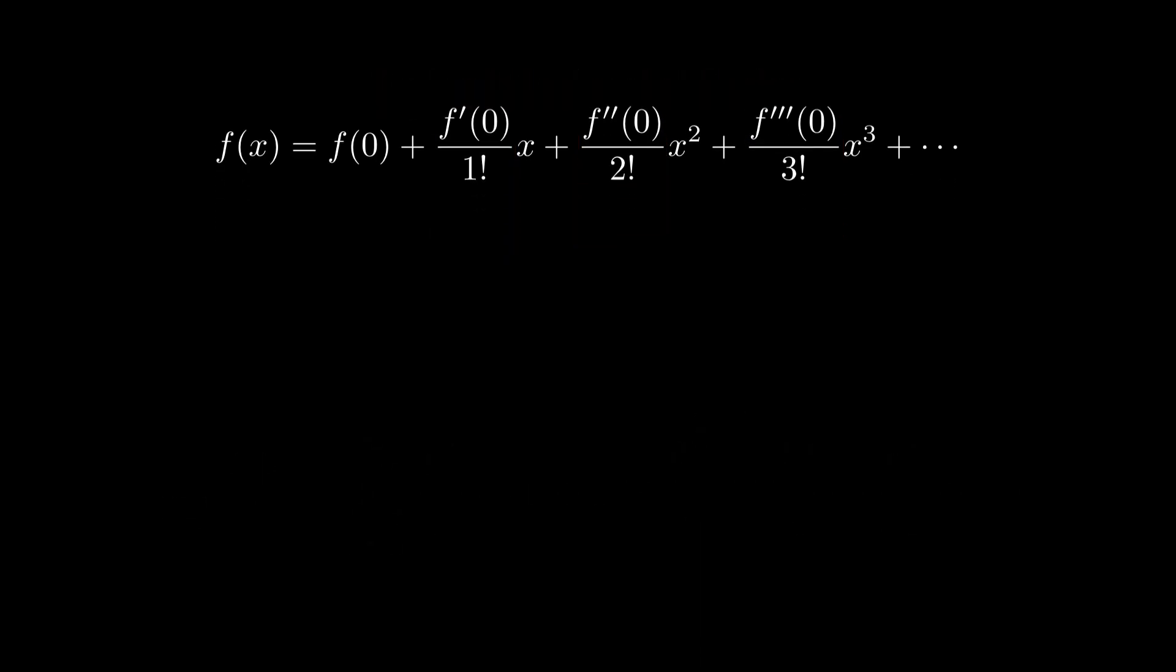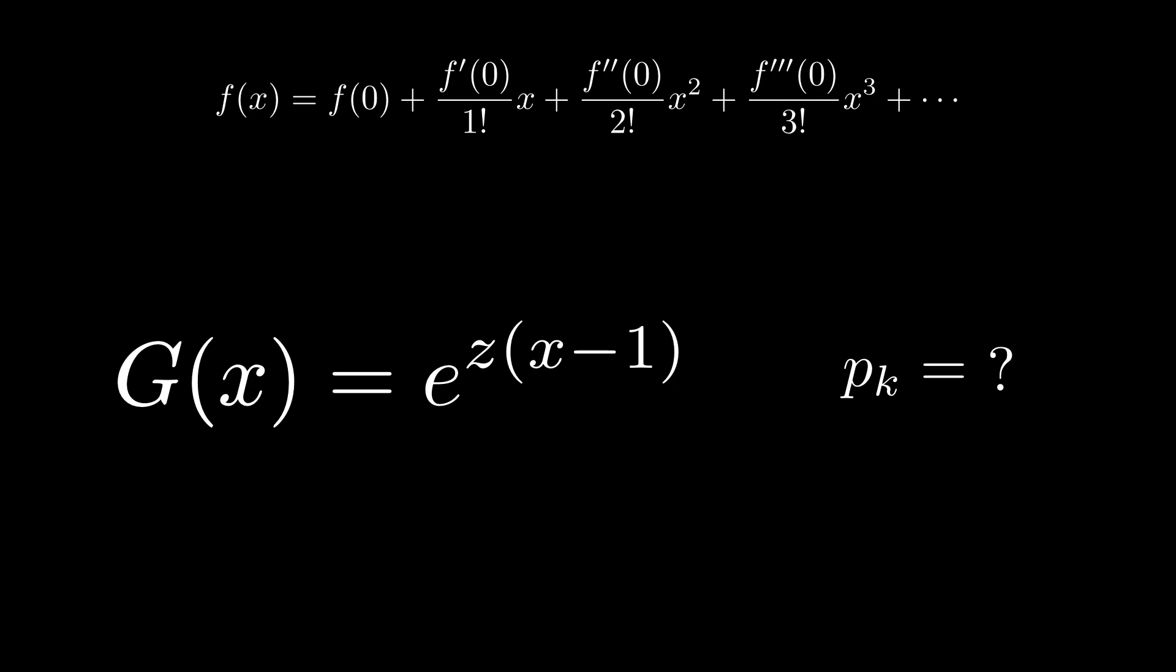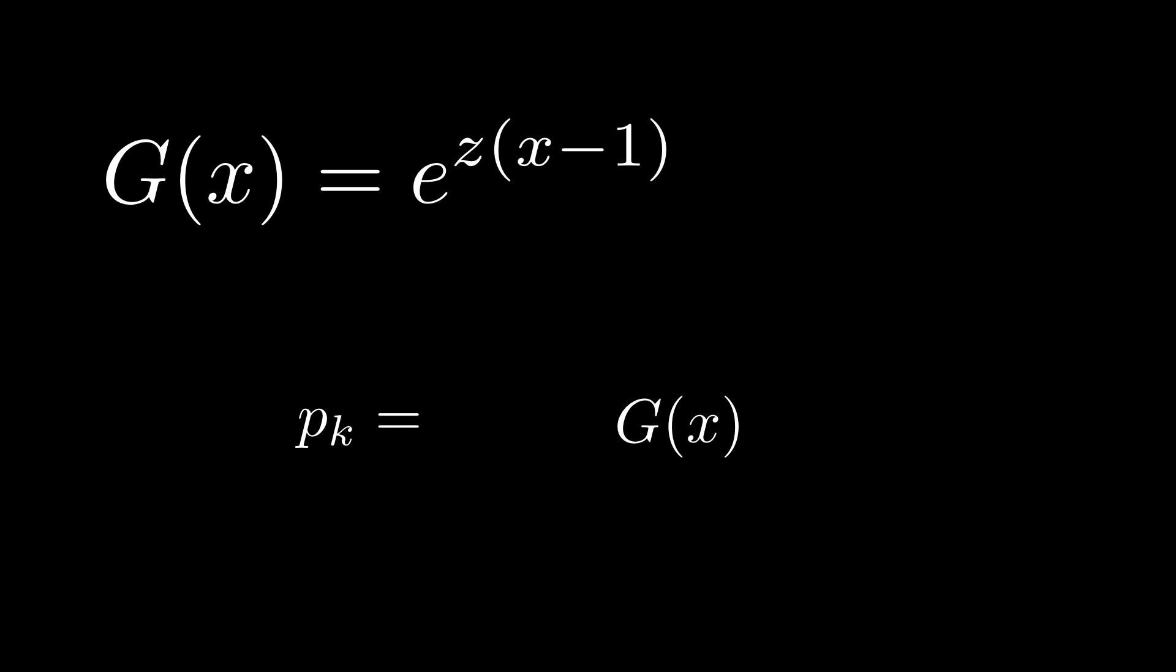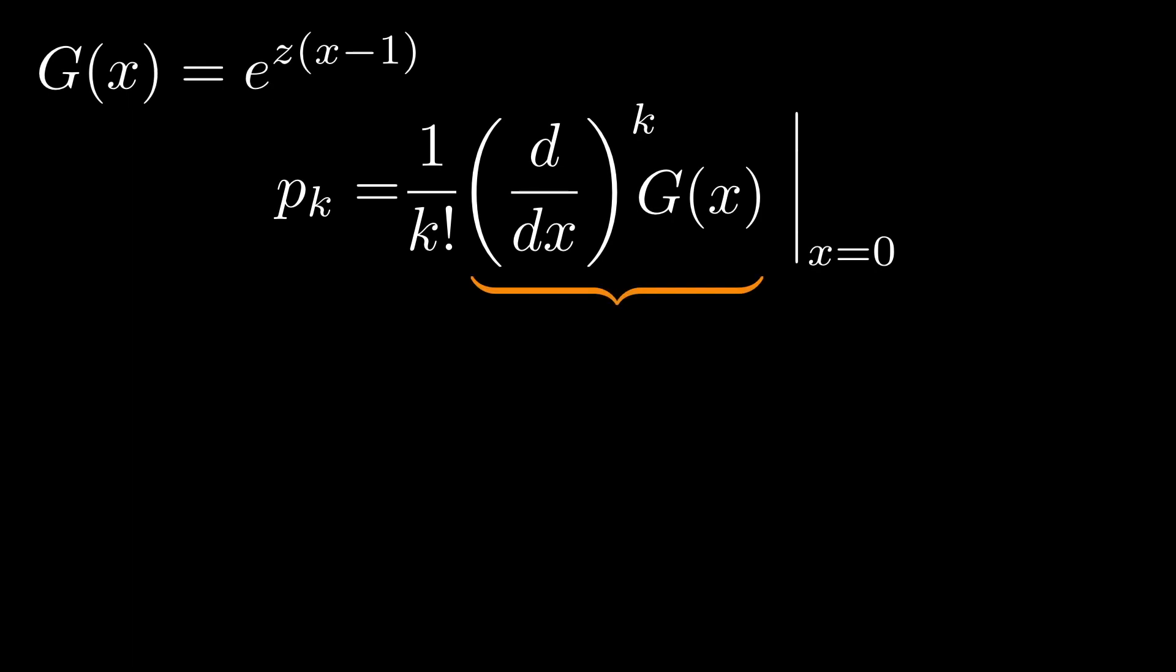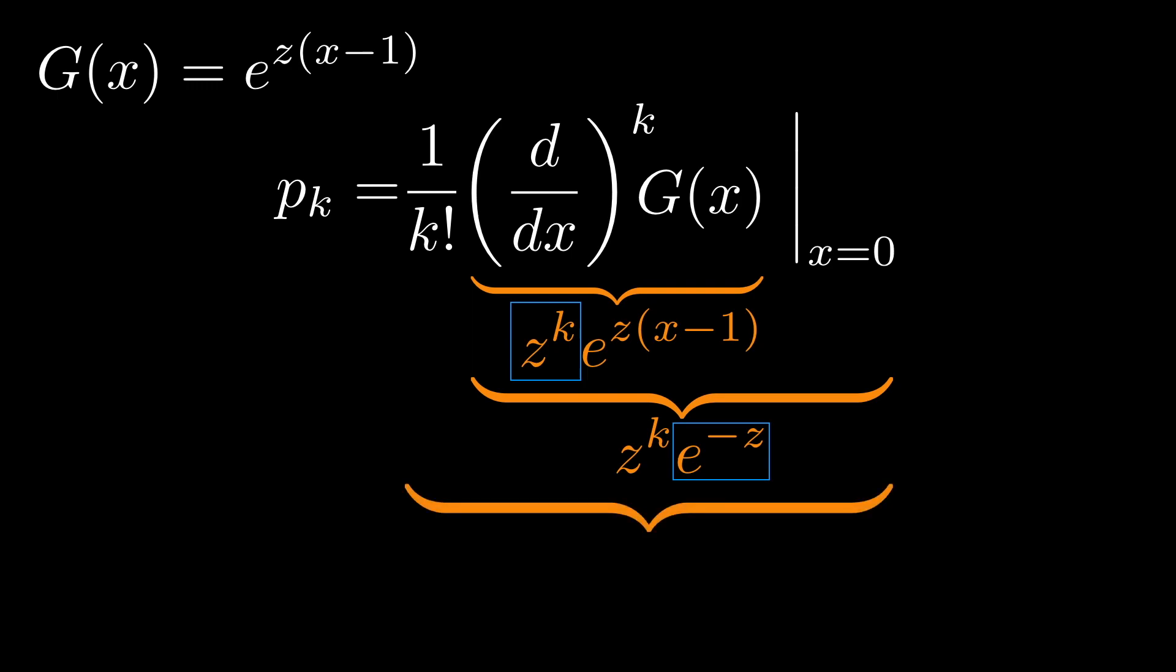Now let's calculate the probability value from our exponential function. Say we want to get the probability to have k successes. Then we want to take the derivative k times, put 0 into x, and then divide it with k factorial. Because whenever we take a derivative, we get one z out. We'll get z to the k term here. And then by putting 0 to x, we get e to the minus z term here. And finally, we have k factorial. And we got this.